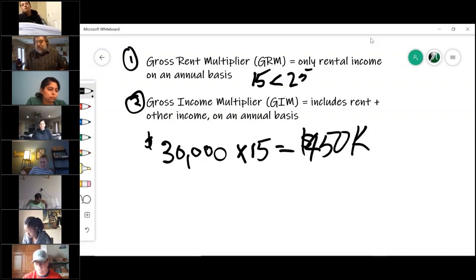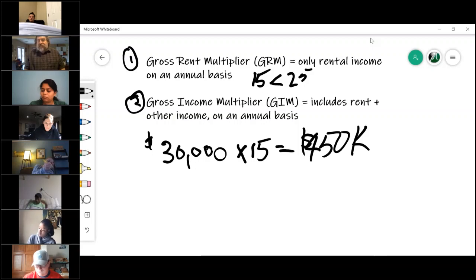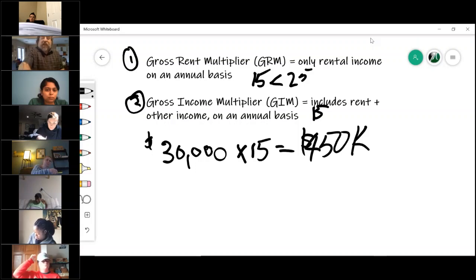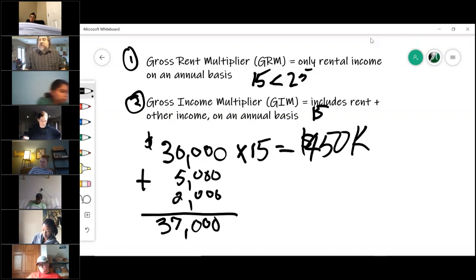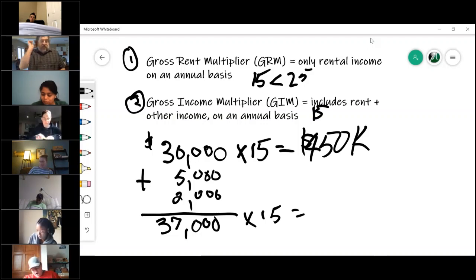On the gross rental multiplier, you only multiply the rental income. On the gross income multiplier, it would take into account other sources of income like the laundry machines, the coke machine, and we rented out the clubhouse and we sold pool passes. So in this example, if we said a gross income multiplier of 15, but now we have to look at all of the income, so 30,000 was the rent, but we made five grand in pool passes and we made two grand in coke machine. Our total income is 37,000 now.